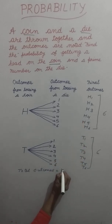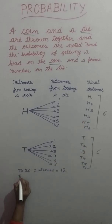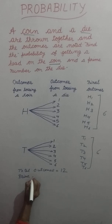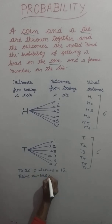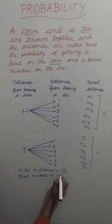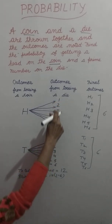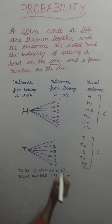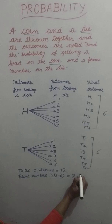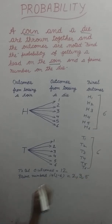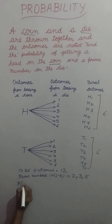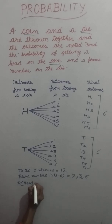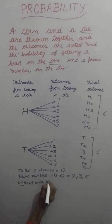My total outcomes are twelve. Now the prime numbers on a die are two, three, and five.